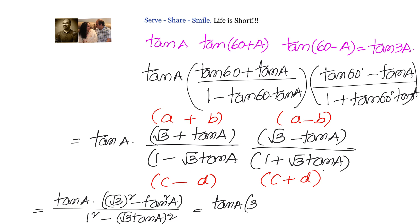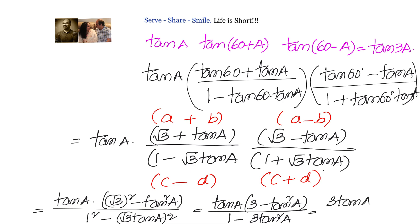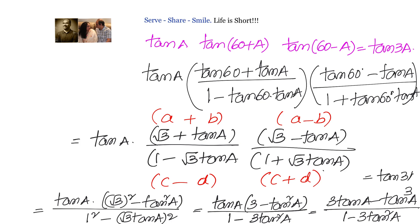On simplification: (√3)² is 3, so numerator becomes 3·tan(a) minus tan³(a). The denominator (√3·tan(a))² is 3·tan²(a), so we get 1 minus 3·tan²(a). This gives us 3·tan(a) minus tan³(a) divided by 1 minus 3·tan²(a), which is nothing but tan(3a).